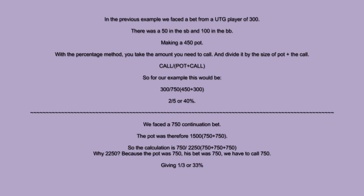Moving on to the flop action, we faced a 750 continuation bet. The pot was there for 1500 — 750 plus 750. So the calculation is 750 divided by 2250, because there was 750 in the pot, he then bets 750, and the amount we have to call is 750. This would give one third, or 33%. You can get down to those thirds by dividing both sides: 750 divided by 750 is 1, and 2250 divided by 750 is 3. One third is obviously 33%. Simple.